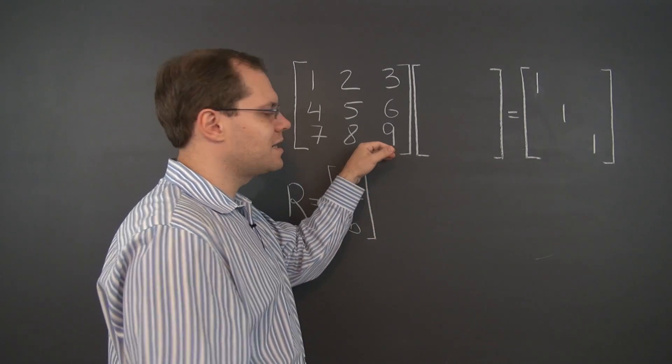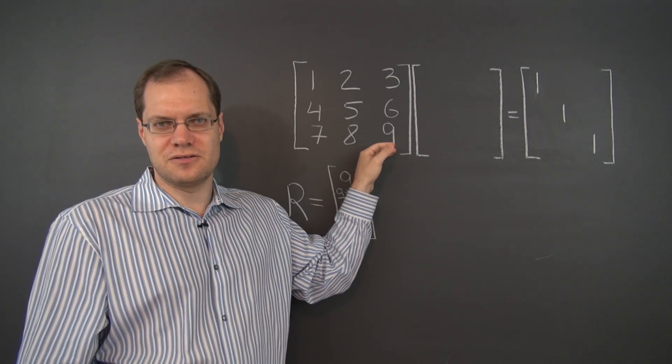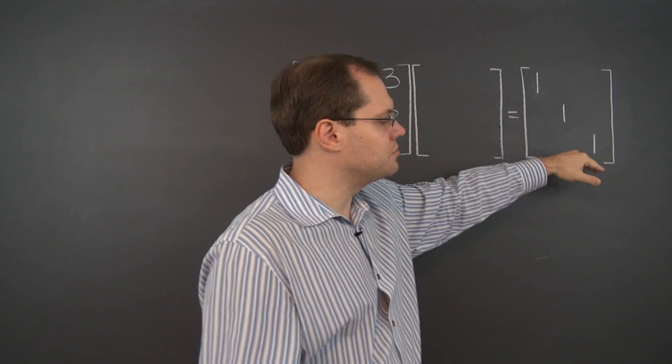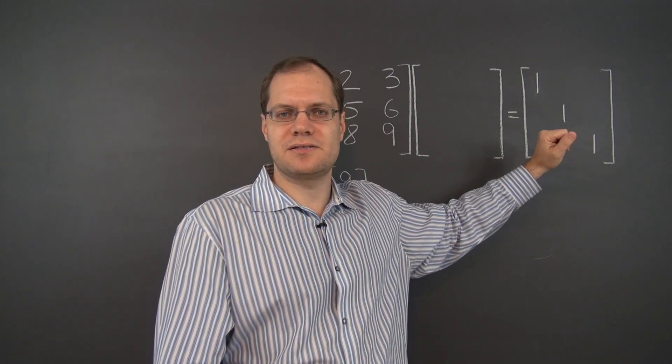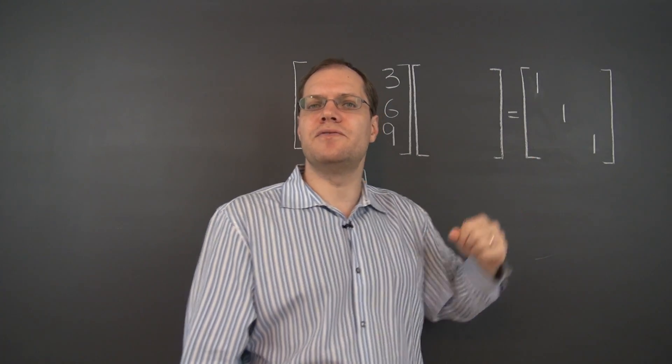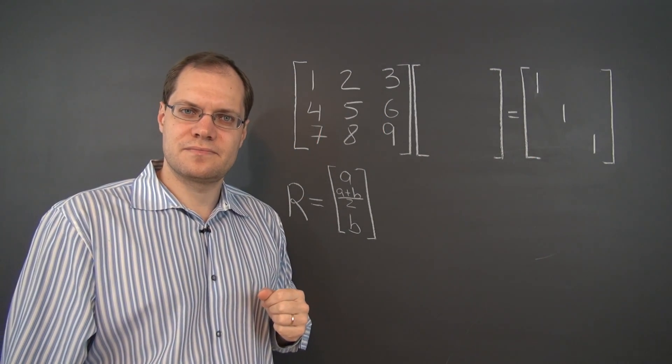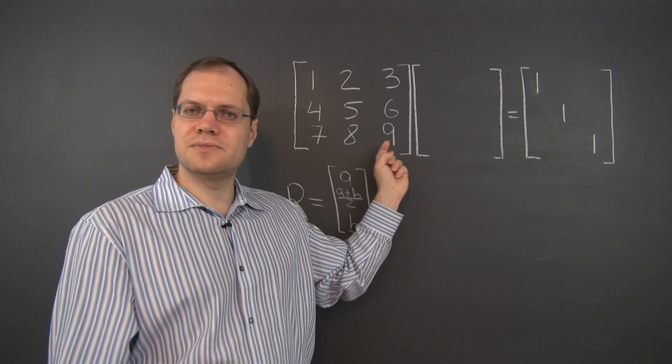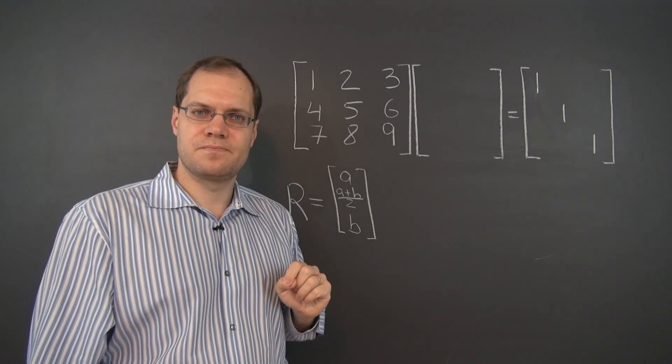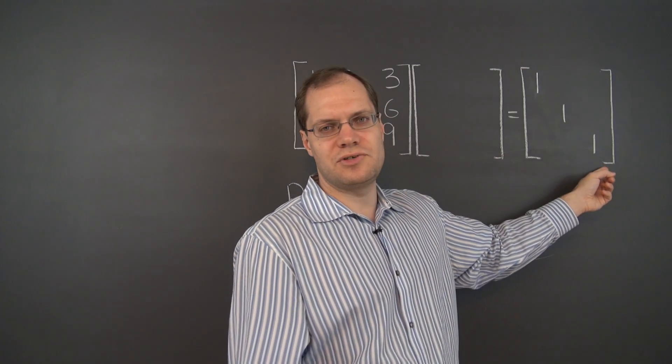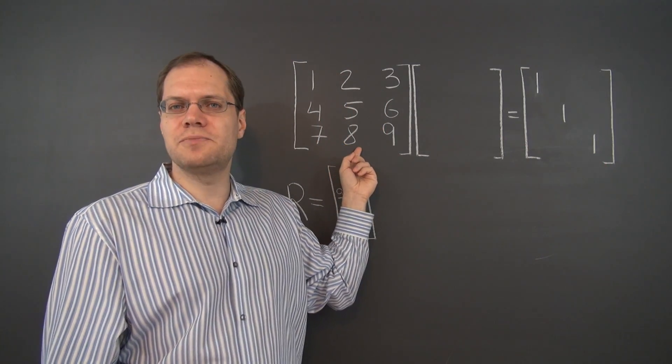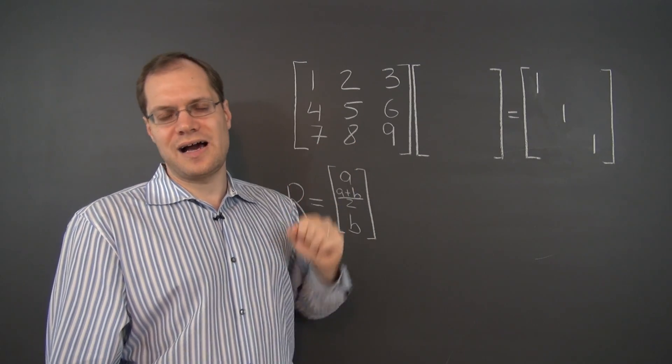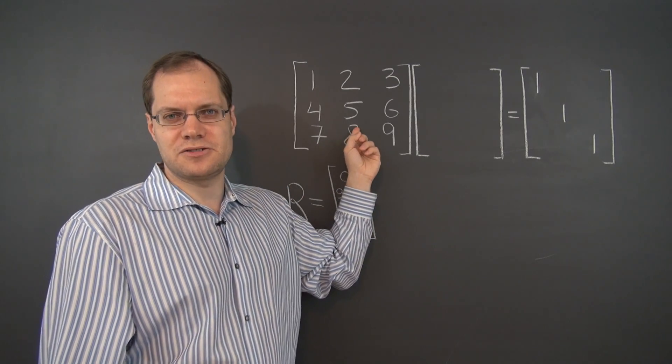Now, when the column space is two-dimensional, the resulting matrix cannot have a three-dimensional column space. That's because the columns of the resulting matrix are linear combinations of the columns of this matrix. So, each of the columns in the resulting matrix is, by the very definition of matrix multiplication, in the column space of this matrix.